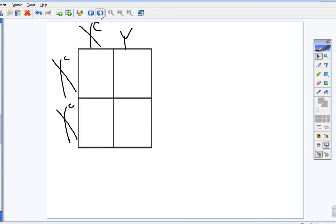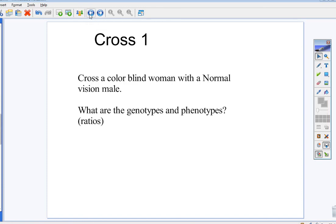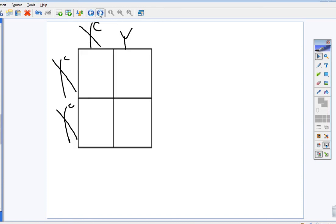Here's how you would set it up. Here's a male. Here's a female. She's colorblind. He is normal vision. That's what you're doing. I'll give you a second to pause. Here are your results.